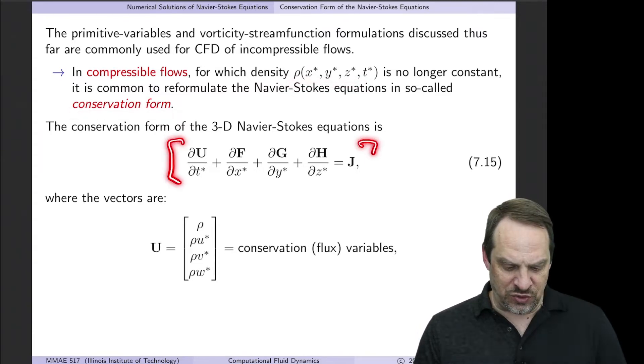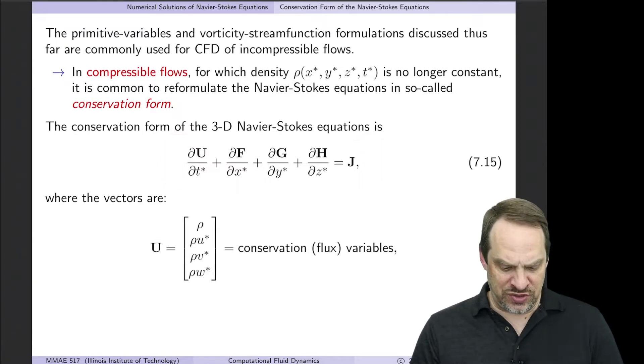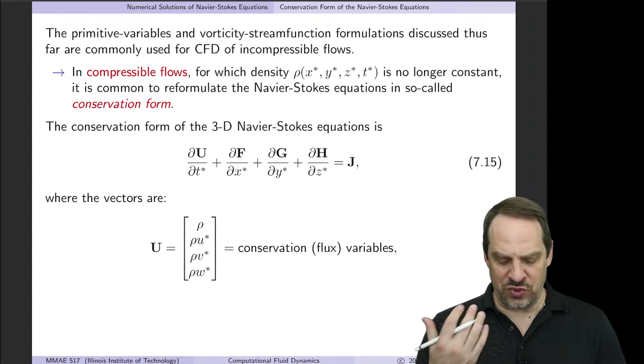So here's the general form of the 3D Navier-Stokes equations. Everything with the time variable is in U. Everything with the x variable is in F, y is in G, z is in H. Everything else is in the J, the forcing term.